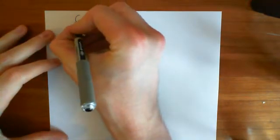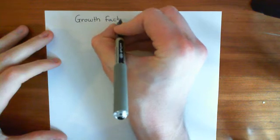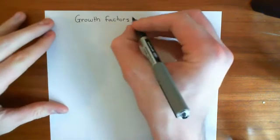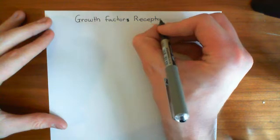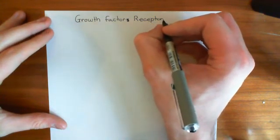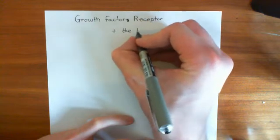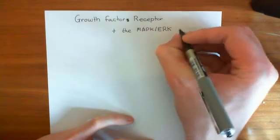Welcome to this next video in the playlist on cancer. In this video, we're going to look at growth factor receptors — how growth factors, which are proteins, binding to growth factor receptors, triggers a downstream signaling pathway known as the MAPK-ERK pathway. We're going to look at how this actually causes a cell to divide.